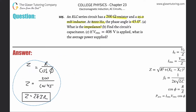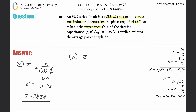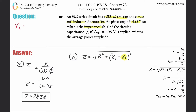Letter b: find the circuit's capacitance. To solve this we use the impedance formula: impedance equals the square root of the resistance squared plus the reactive inductance minus the reactive capacitance, all squared. I'm going to solve for the reactive capacitance, but first let's find the reactive inductance.